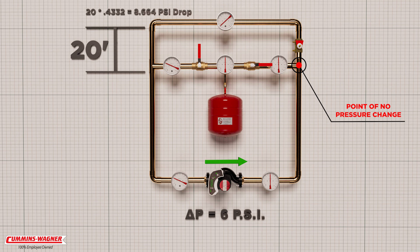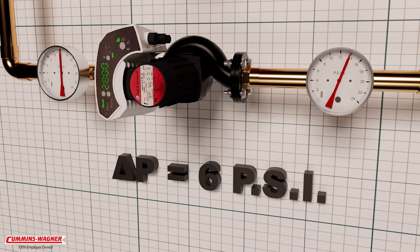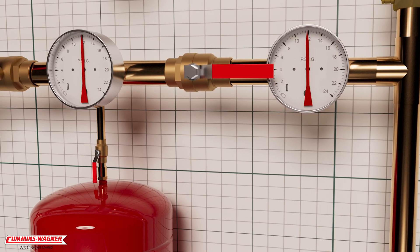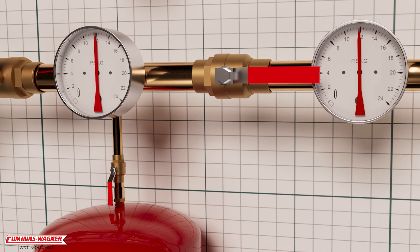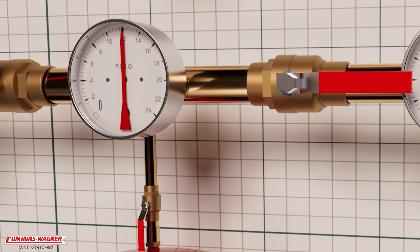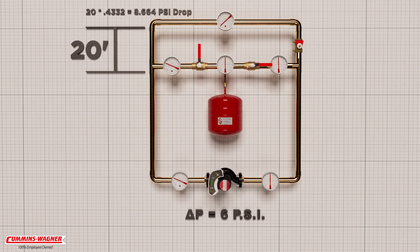We can see the immediate result of pumping into the point of no pressure change. Previously, with the expansion tank in the correct position, we were able to achieve 18 psi on the discharge of the circulator. But now that we're pumping into the point of no pressure change, we can only achieve the pressure at that point. Since the expansion tank is charged to match the system pressure — in this case 12 psi — the circulator is unable to increase the pressure beyond 12 psi, so our discharge pressure at the circulator is 12 psi.